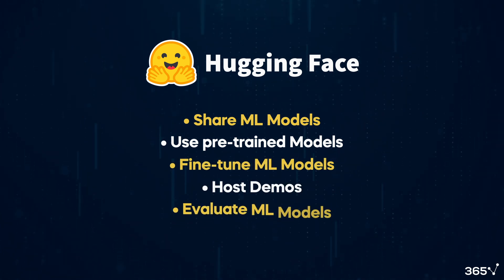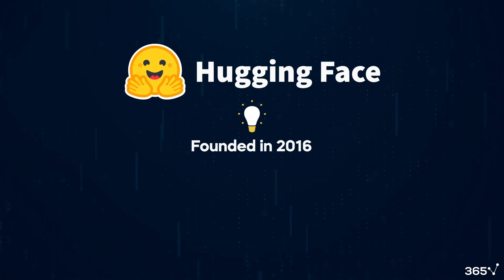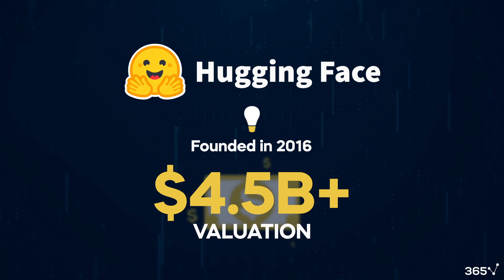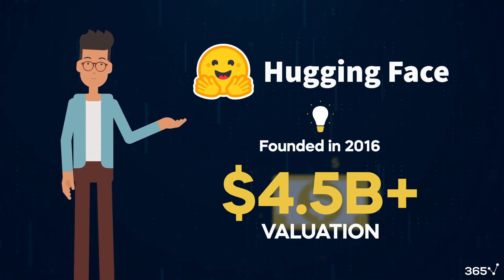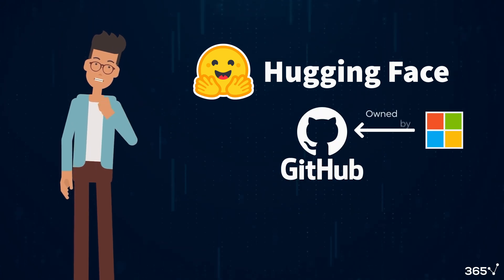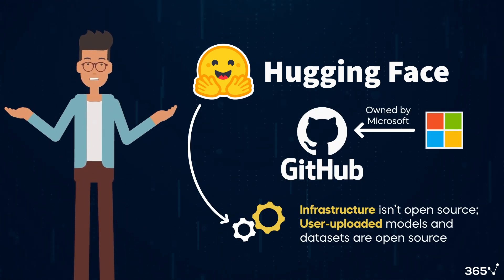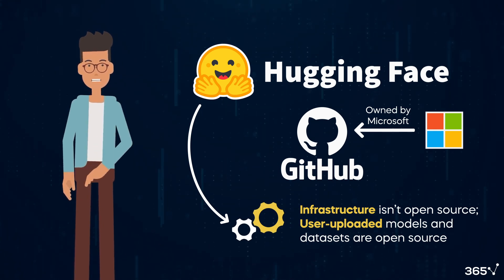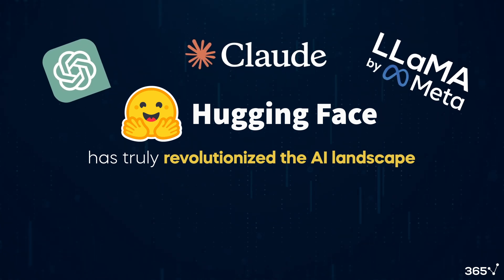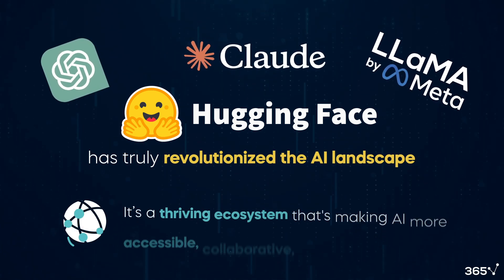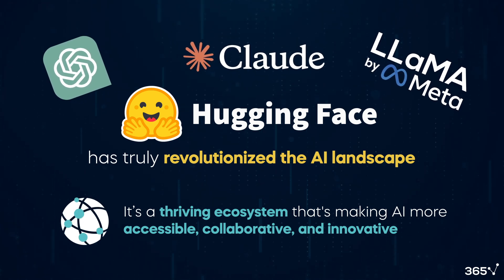Founded in 2016, Hugging Face now boasts a valuation exceeding $4.5 billion, indicating substantial resources and commercial status. Like GitHub, owned by Microsoft, Hugging Face's infrastructure isn't open-source, though user-uploaded models and datasets are. Hugging Face has truly revolutionized the AI landscape — it's a thriving ecosystem that makes AI more accessible, collaborative, and innovative than ever before.